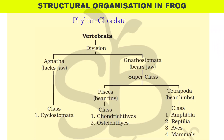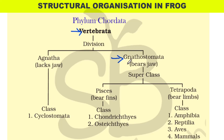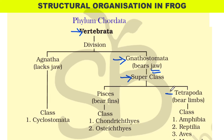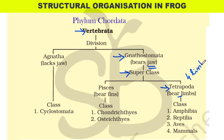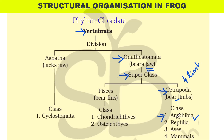The systematic position of the frog: Frog belongs to Phylum Chordata, Subphylum Vertebrata, Division Gnathostomata, and Superclass Tetrapoda. Phylum Chordata is characterized by the presence of a notochord, Subphylum Vertebrata has a vertebral column, and Superclass Tetrapoda includes organisms with four appendages.